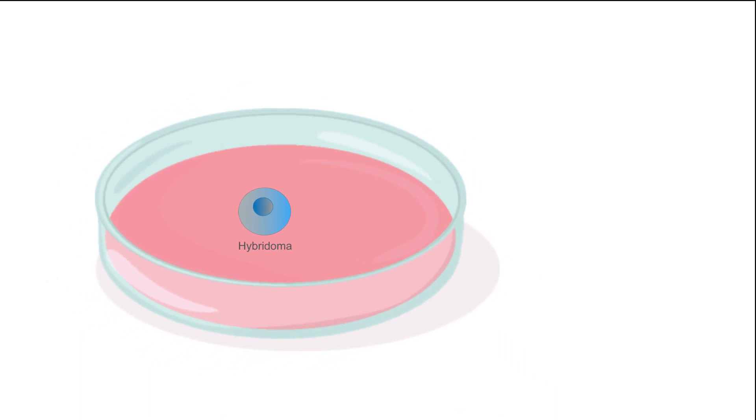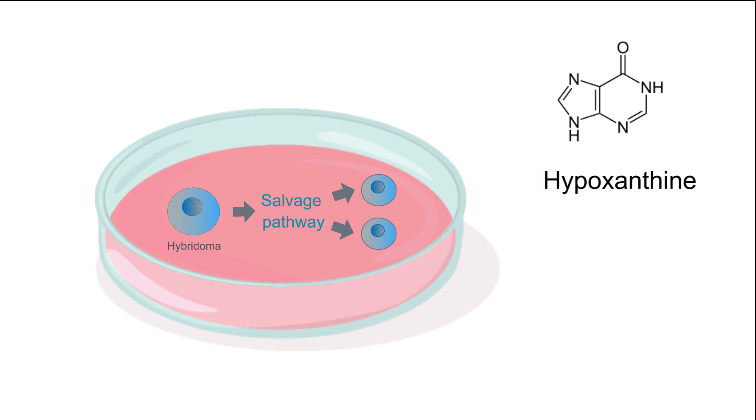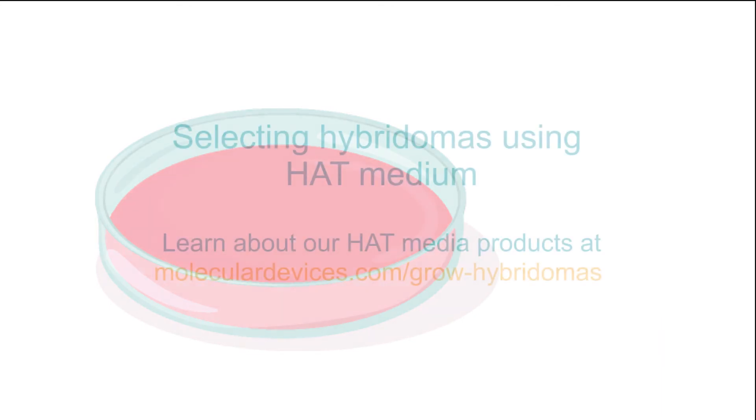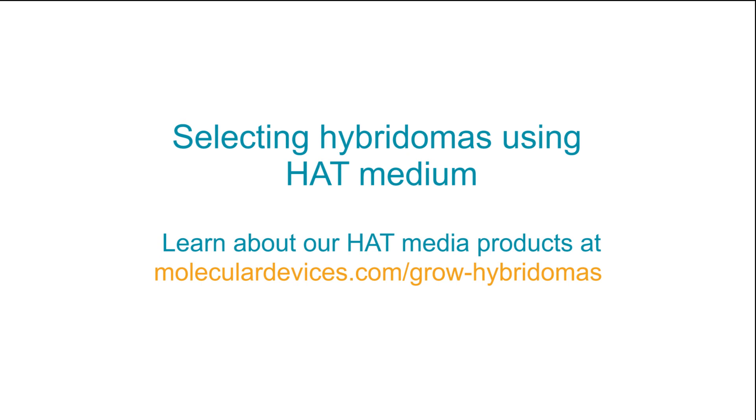As cells recover from the selection pressures of aminopterine, they will still utilize the salvage pathway as a means to replicate. Hypoxanthine and thymidine are maintained in the media until the hybridomas are fully recovered. And this is how the HAT selection works.